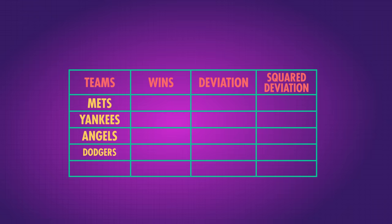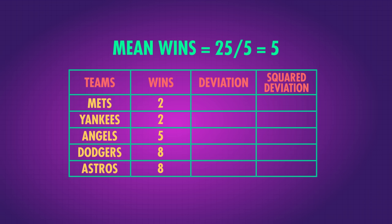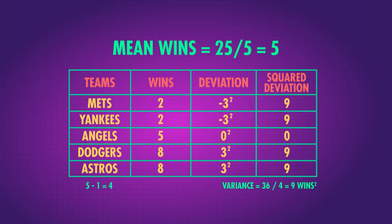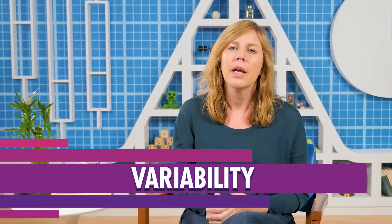For example, say that the Mets, the Yankees, the Angels, the Dodgers, and the Astros have 2, 2, 5, 8, and 8 wins each. The mean number of wins for the group of teams is 5, or 25 divided by 5. To calculate the variance, we take each number and subtract the mean, square this difference, then add all of these squared differences together, and divide by the number of data points minus 1. The variance of this set is 9 plus 9 plus 0 plus 9 plus 9, all divided by 4, which equals 9 squared wins. The variance is a really useful number to have because it tells us how much variability is in our data. In our baseball example, it tells us roughly how far each team's win record is from the mean. We'll see it pop up quite often once we get to inferential statistics.